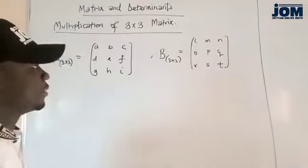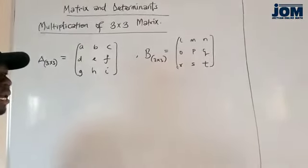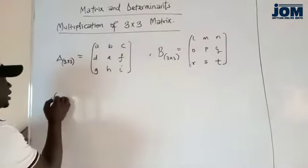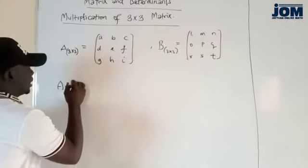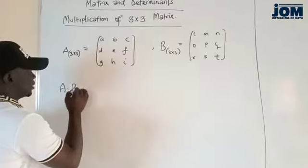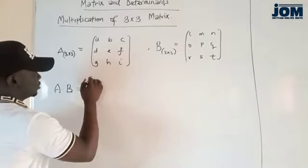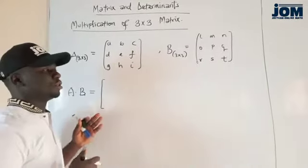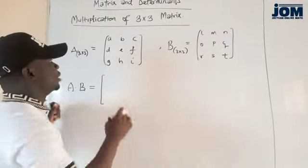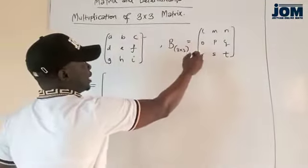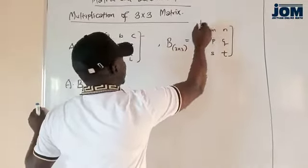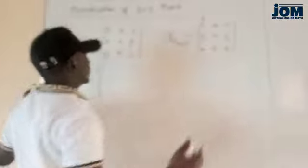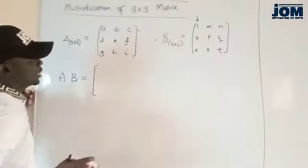To multiply this matrix, just like we did earlier on in 2x2 matrix, A multiplied by B is equal to — we are going to do row and column multiplication through by row and column. The first row multiplied by the first column, the second row multiplied — that's how we are going to be doing. So, let's start.